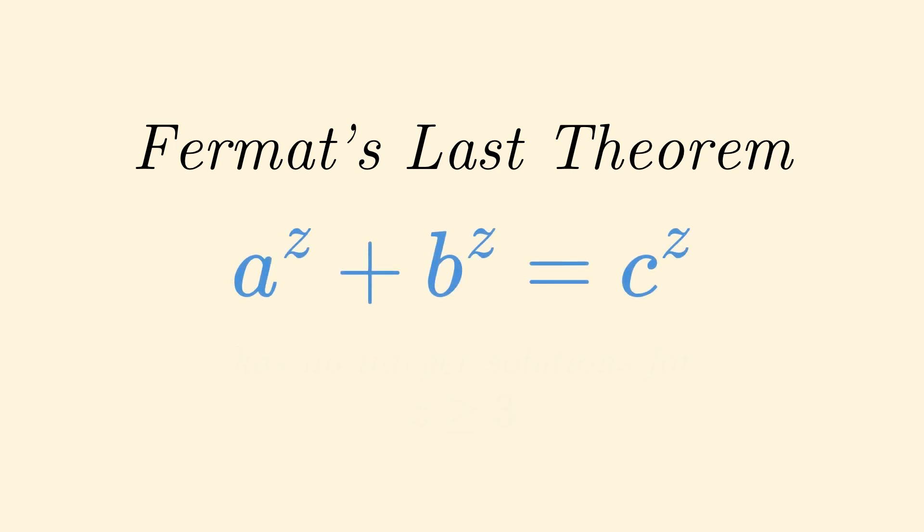So what does the theorem say? The statement is actually quite simple. It looks a bit like the Pythagorean theorem and it basically says that a generalized version where the exponent is 3 or greater cannot exist.